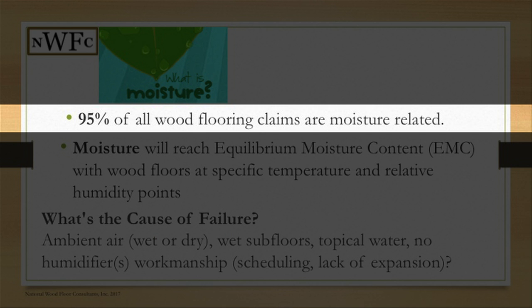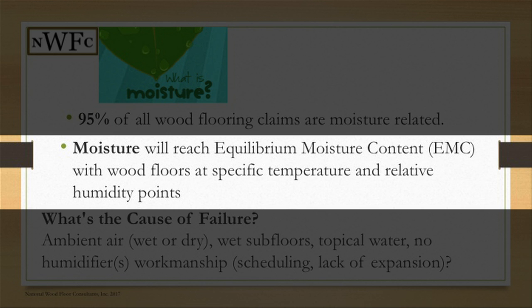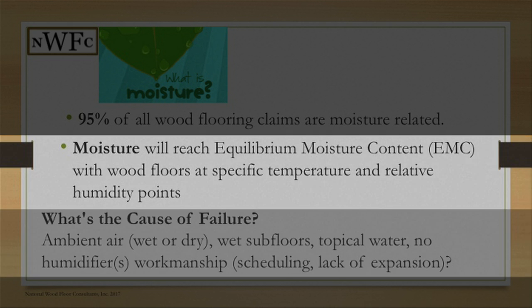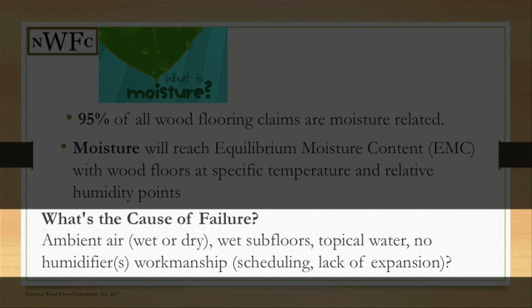When we look at wood floor failures, 95% of them are all moisture related. We must understand that moisture will reach an equilibrium moisture content with the wood at specific temperature and relative humidity points. What causes the failure is always going to be ambient air, wet subfloors, topical water, no humidifiers, or possibly workmanship — for example, scheduling issues or lack of expansion. These are the things we must consider when looking at what failures will do.